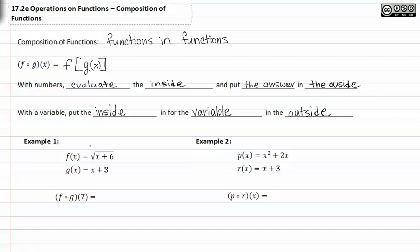So we take f and g, and we're asked to put g in for f. Since it's a number we're supposed to be using to evaluate, we will write this as g of 7 and find that first. g of 7 is 7 plus 3, or 10.